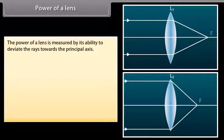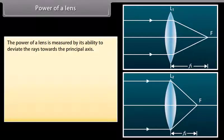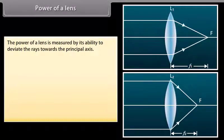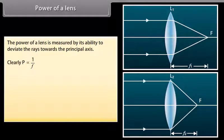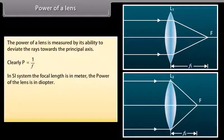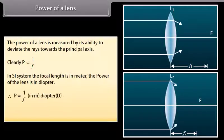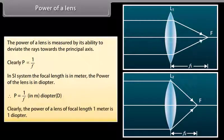Power of a lens. The power of a lens is measured by its ability to deviate rays towards the principal axis. Lens L2 has a focal length less than L1; therefore, L2 bends rays more than L1, and the power of L2 is greater than that of L1. Power P is directly proportional to 1/F. In SI units, with focal length in meters, P = 1/F (in meters), measured in diopters (D). A lens of focal length 1 meter has a power of 1 diopter.